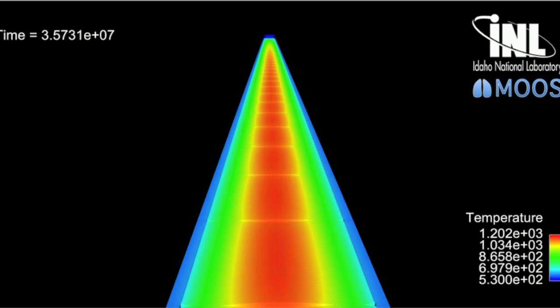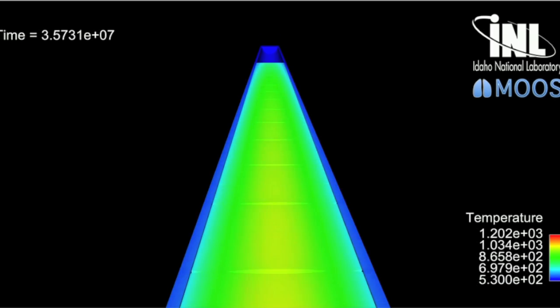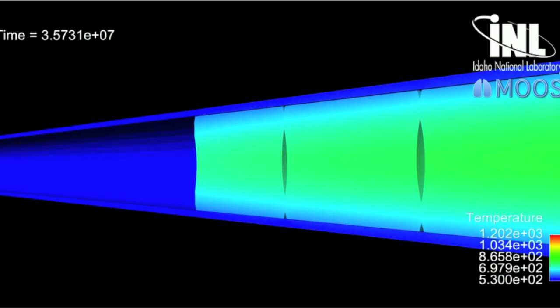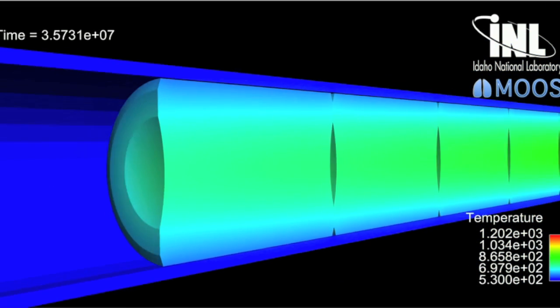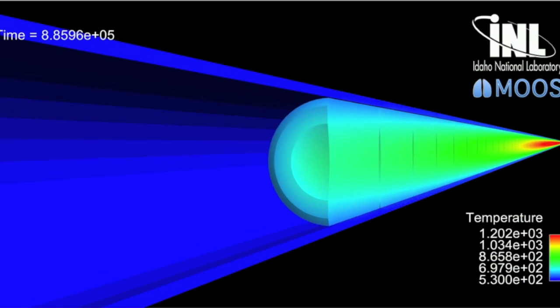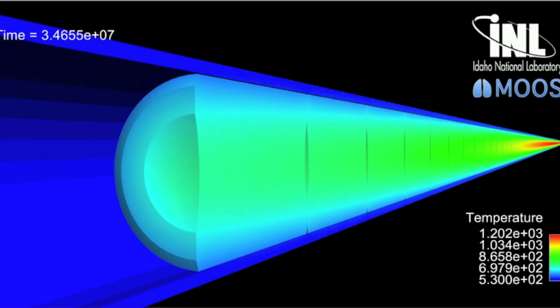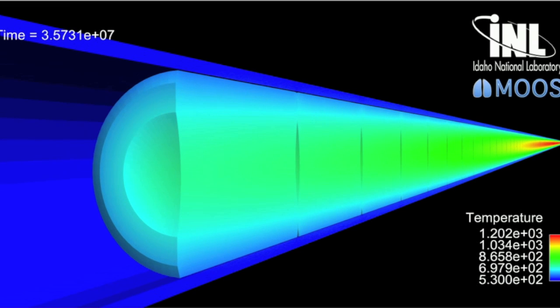Having these type of high-fidelity simulations allows us to understand exactly how a real fuel rod would react inside of a reactor. Specifically, one of the things we were looking at in this simulation is how much the pellet stack would grow due to the thermal expansion and the fission product swelling. So that gives us an idea of design margins, that sort of thing.